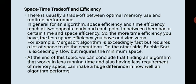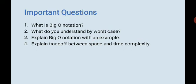At the end of this topic we can conclude that finding an algorithm that works in less running time and also has less requirement of memory can make a huge difference in how well an algorithm performs. This is the art of optimizing—how do you optimize the time and memory. I hope you liked the video. I tried to explain it in a very general way with general examples. There are a few questions that can be asked: What is Big O notation? What do you understand by worst case? You need to understand if the two are the same. It can also ask you with an example. I have given an example, you can take any algorithms. And the last is a question for your general understanding: the tradeoff between space and time complexity. That is all for today. Thank you.